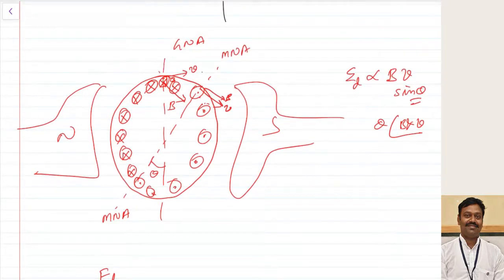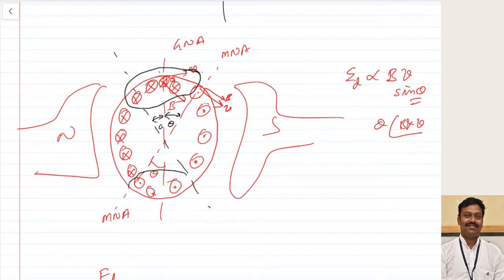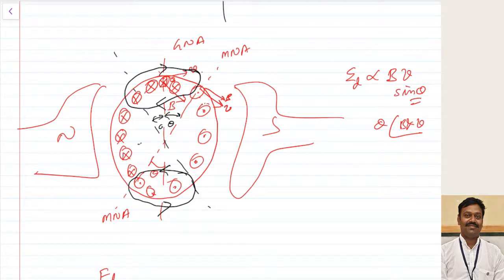Let us see how many conductors are responsible for FD and how many for the cross-magnetizing effect. Taking conductors within the range of theta in both directions, all those conductors are carrying current as cross on top and dot on the bottom. Applying the right-hand thumb rule, the thumb indicates inward and the curled fingers give a clockwise magnetic field direction. The demagnetizing component is 180 degrees opposite to the main field — main field is left to right and demagnetizing is right to left.